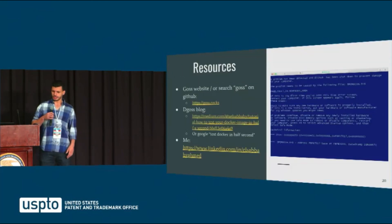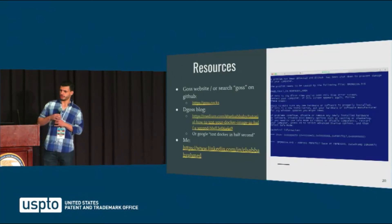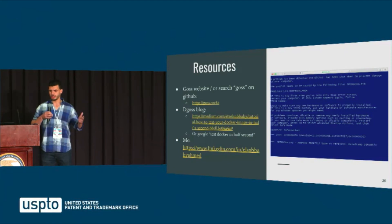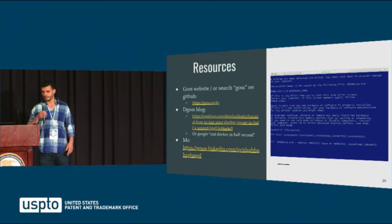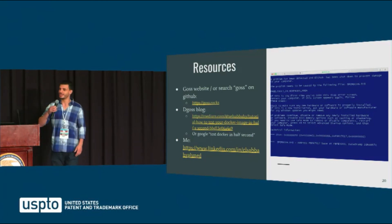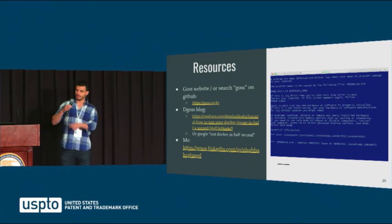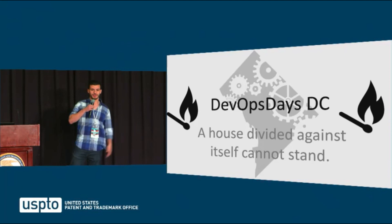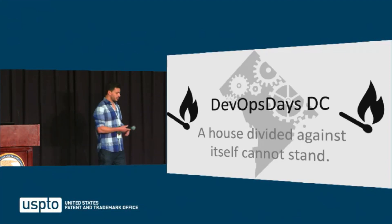I think that's all I have. Goss.rocks is the website, or you can search GOSS on GitHub. If GitHub crashes on you, Control-Delete clears it right up. And you can Google 'test Docker in half a second', or just go to LinkedIn and you can find me there. If you have any questions, you can find me floating around. Thank you.